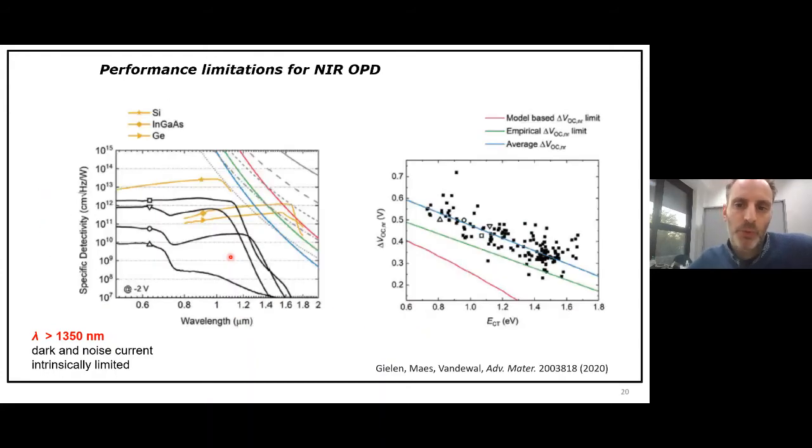If we then use the same approach, again, this graph here is basically the same graph you've shown before, just plotted with different colors and different points. It's again the E_CT versus the non-radiated voltage losses, which we can link to V_OC, which we can then link to dark currents, which we then can link. And that's what we did here on this graph.